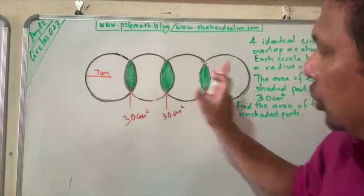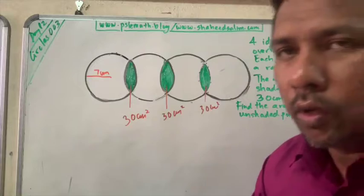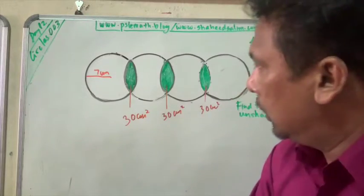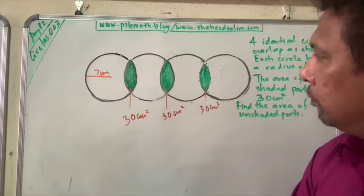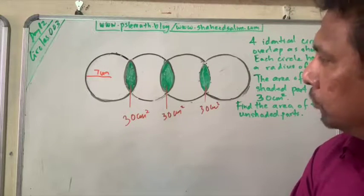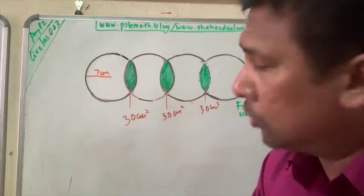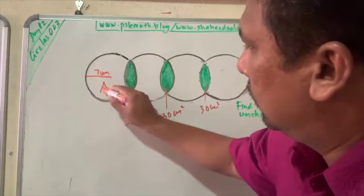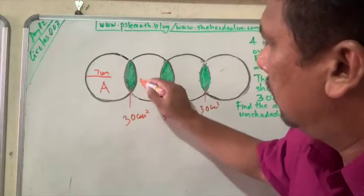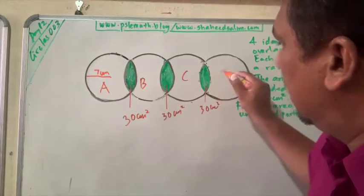Quite an easy question, not too challenging. It's very simple. You find the area of... okay, let's label it, let's label the circles. Let's call this A, B, C, and D.